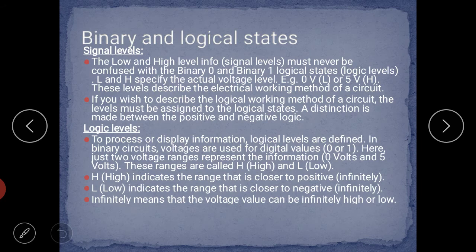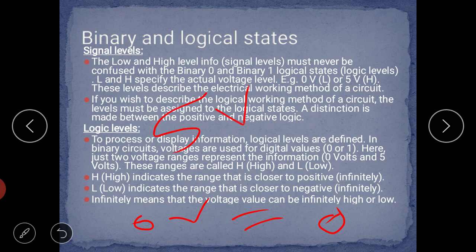To send binary logic states: if the voltage is 0 volts, that corresponds to binary state 0. And if the voltage is 5 volts, that should be indicated by binary number 1. So the logic is: binary 0 equals 0 volts, and binary 1 equals 5 volts.